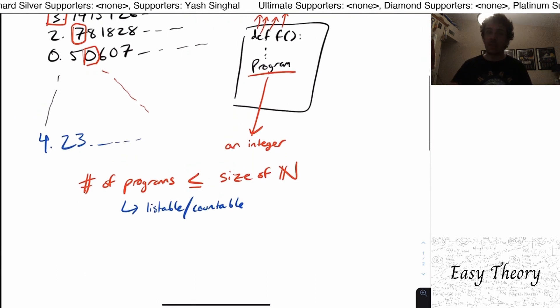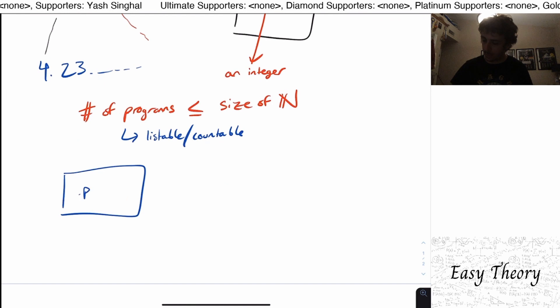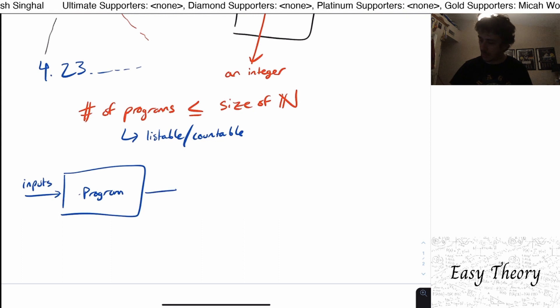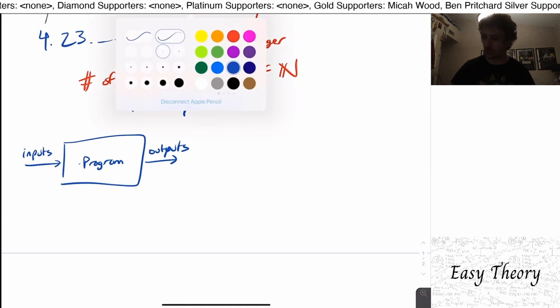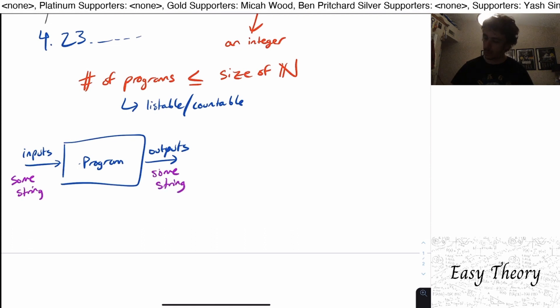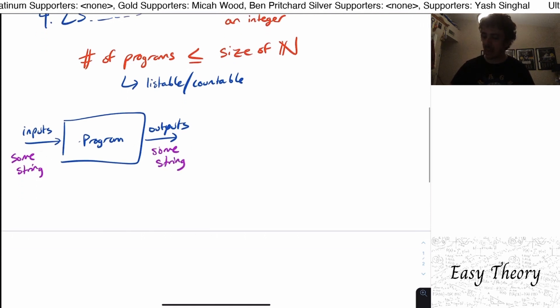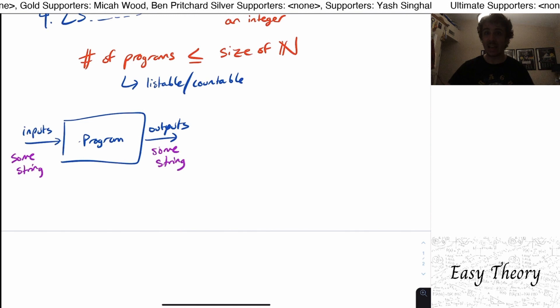Okay well we can think about what a program actually does. So what does a program actually do? So here's our program again. And what it does it gets inputs and outputs. Well the input we can associate to that a particular string for example. So the input is some string and the output is also some string potentially. Well since they can be anything that means that the each of the strings corresponds to an integer and as well as the outputs correspond to an integer.